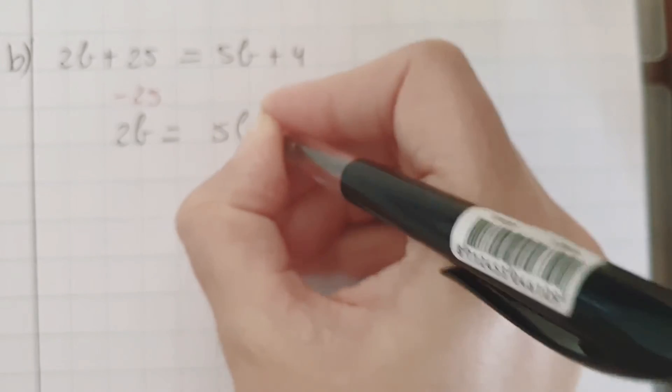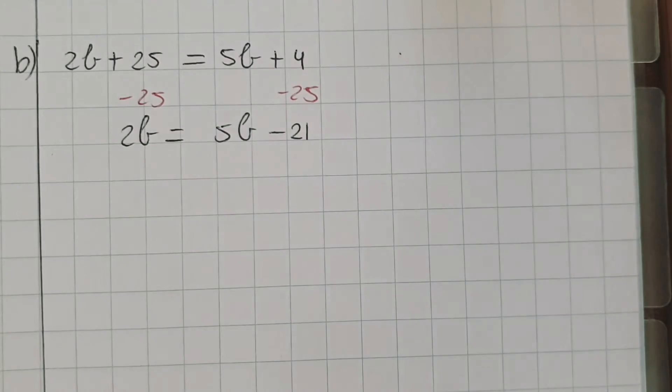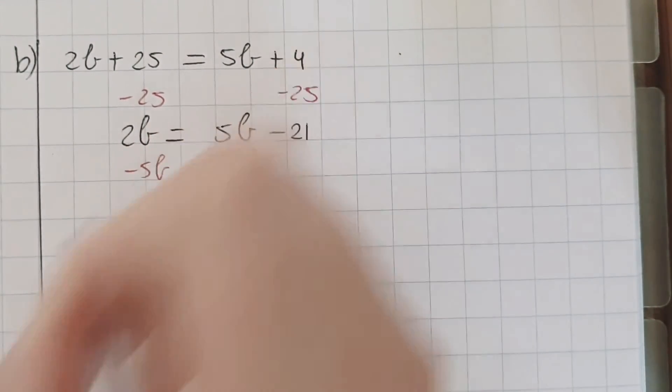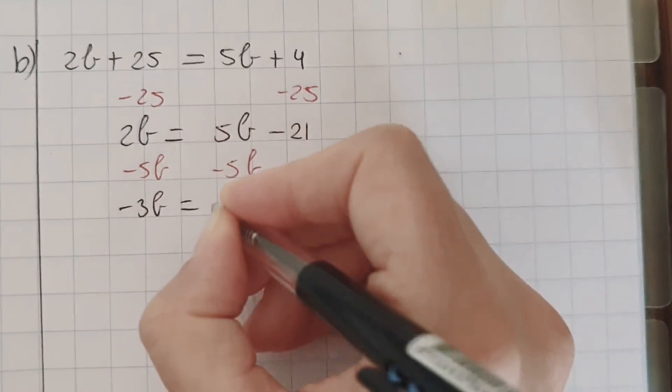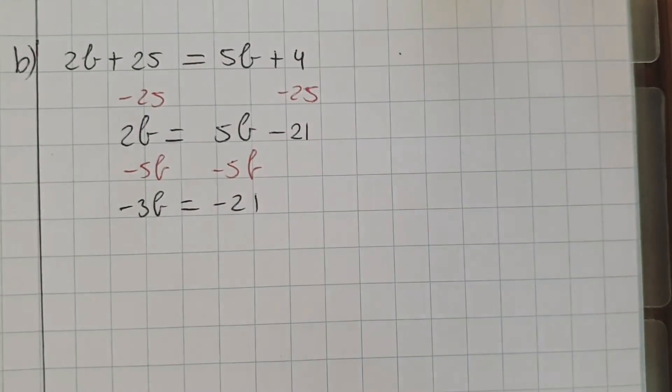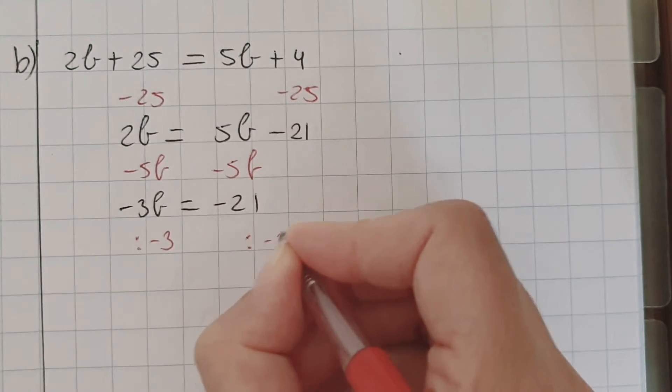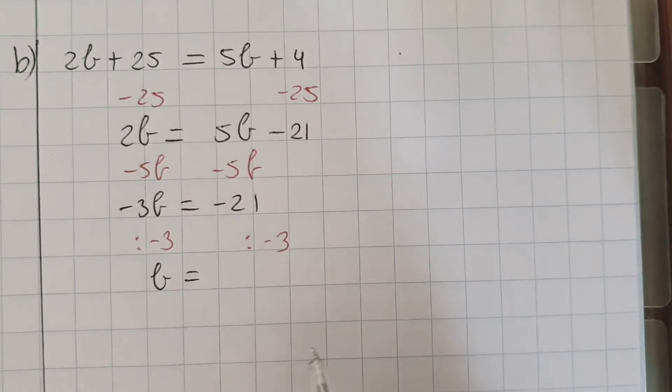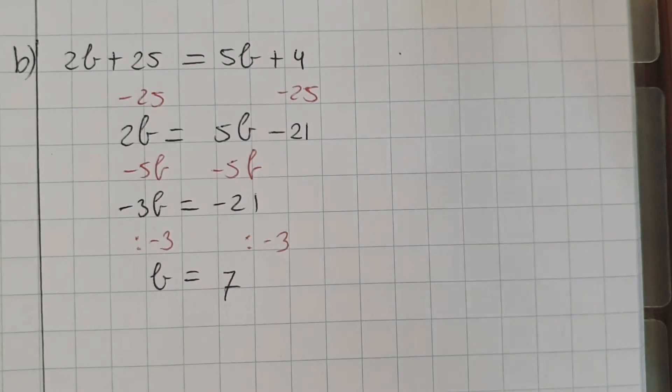So, 4 minus 25 is minus 21. And then minus 5b, minus 5b. So that's minus 3b is minus 21. Divided by the number in front of the letter. So that's divided by minus 3 on both sides. And then it's b equals, minus divided by minus is positive. And 21 divided by 3 is 7. So b is 7.